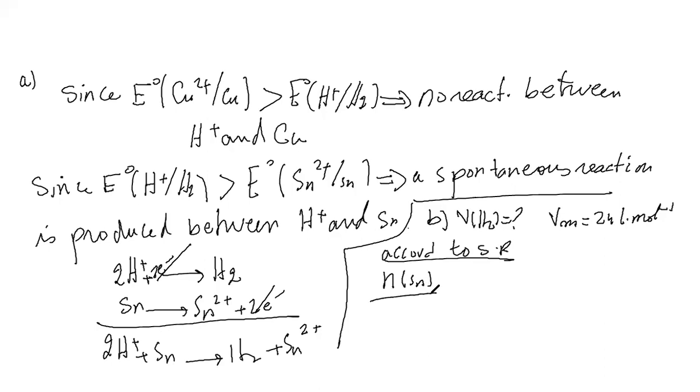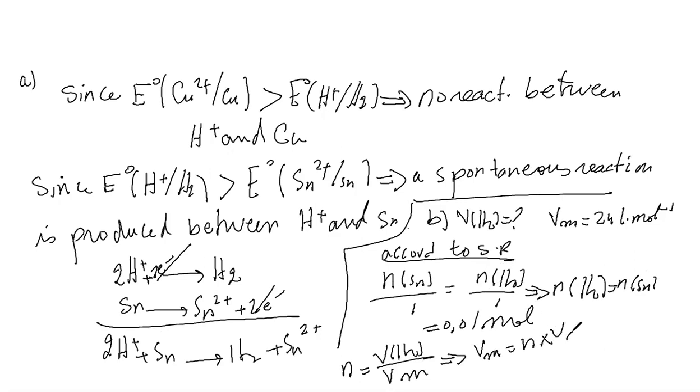I already have the number of moles for Sn. N of Sn over 1 = N of H2 over 1. This implies N of H2 = N of Sn = 0.01 mole. N = V of H2 divided by VM. This implies VM = N times V of H2 = 0.01 times 24 = 0.24 liter.